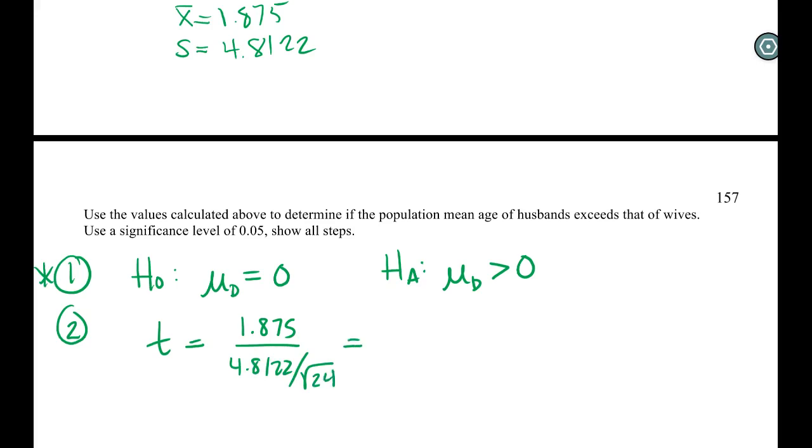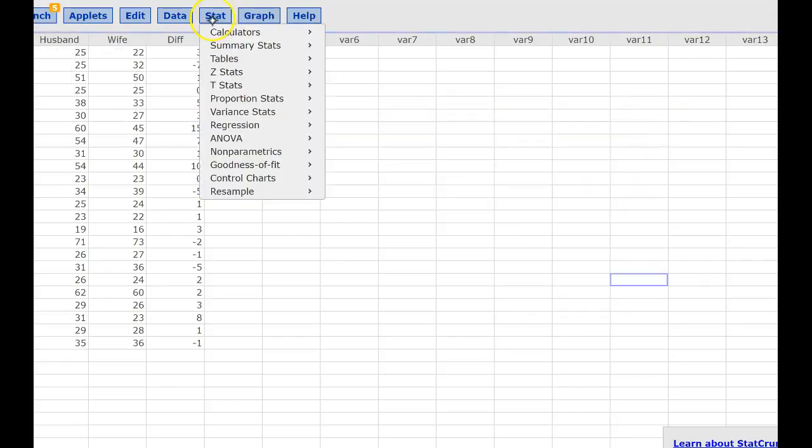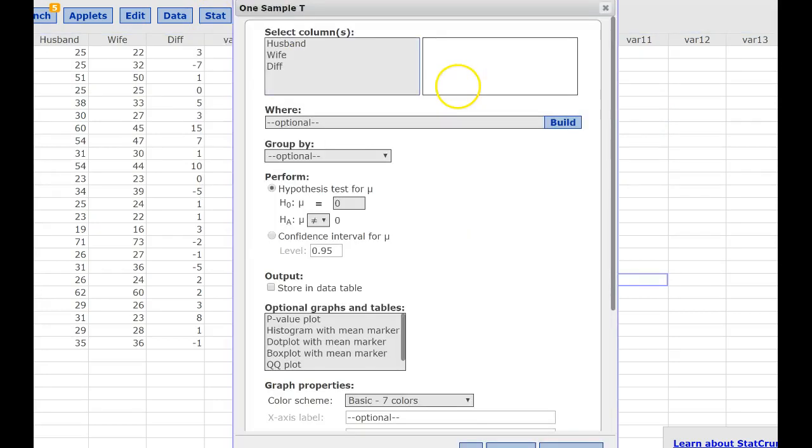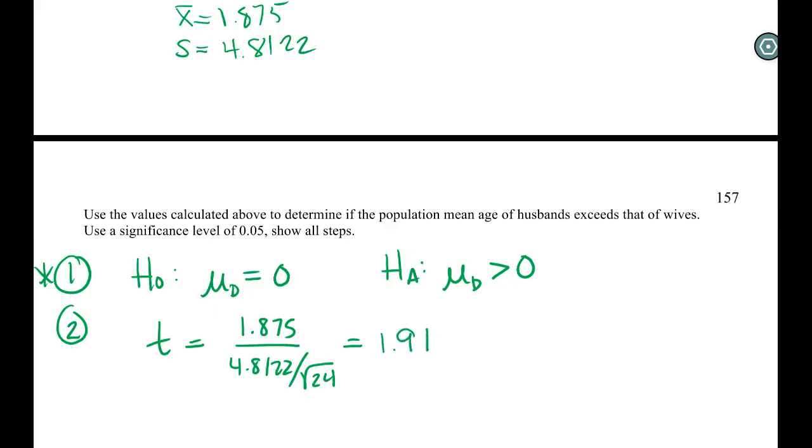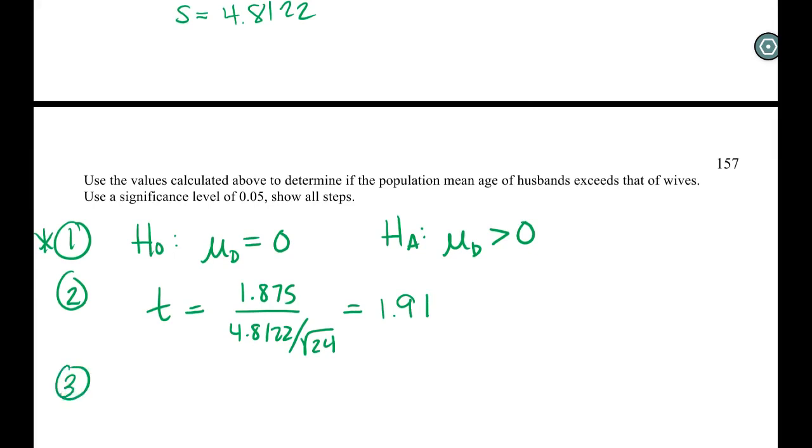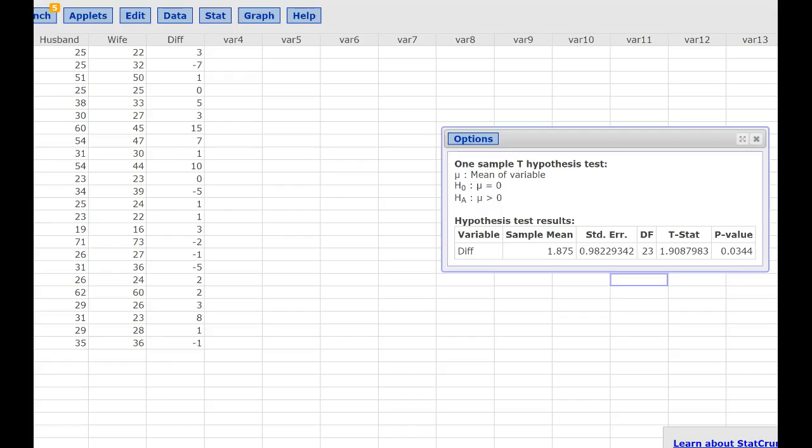Now, we don't need to do that. We can go straight to StatCrunch and have it do it for us. So in StatCrunch, we could do two different ways to do this. One is we're technically just looking at one sample if we're looking at the differences. We just want to say, is the differences, are they zero or are they greater than zero? And we could just do a one test, a one sample test for that. So you see here our mean, our standard error now, degree of freedom, and our test statistic is 1.91. Alternatively, I'm going to go ahead and grab my p-value where we have this open, though. 0.0344.